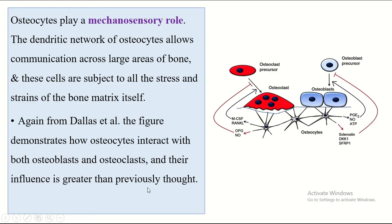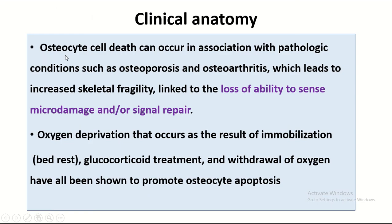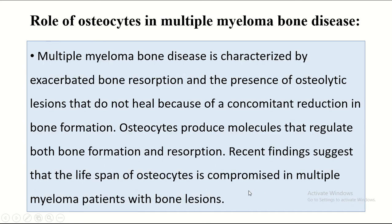Regarding clinical anatomy: osteocyte cell death can occur in association with pathological conditions such as osteoporosis and osteoarthritis, which leads to increased skeletal fragility linked to loss of ability to sense micro-damage and signal repair. Oxygen deprivation resulting from immobilization, bed rest, glucocorticoid treatment, and withdrawal of oxygen have all been shown to promote osteocyte apoptosis.